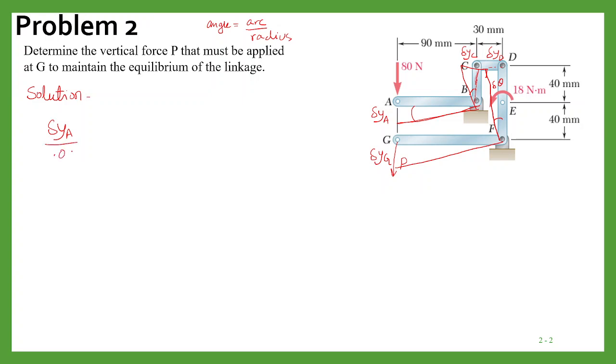So since this angle is same, that means this arc delta y_a upon its radius, that is 0.09, should be equal to delta y_c, and its radius is 0.04, that means delta y_a should be equal to 9 by 4 delta y_c.